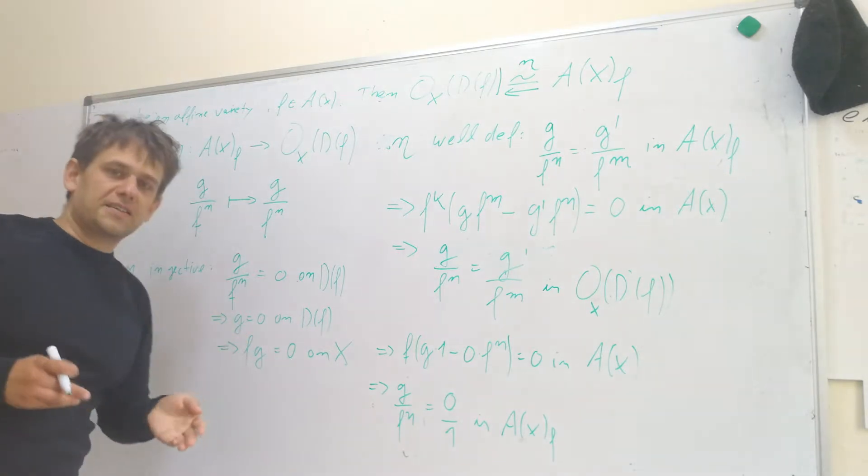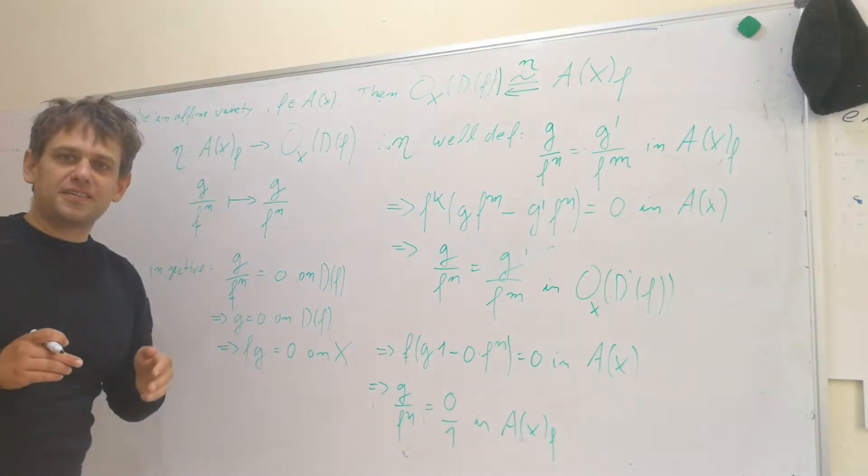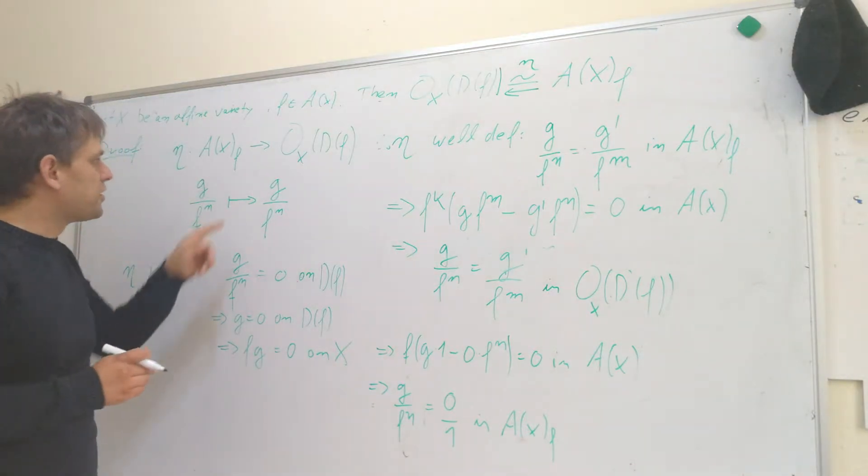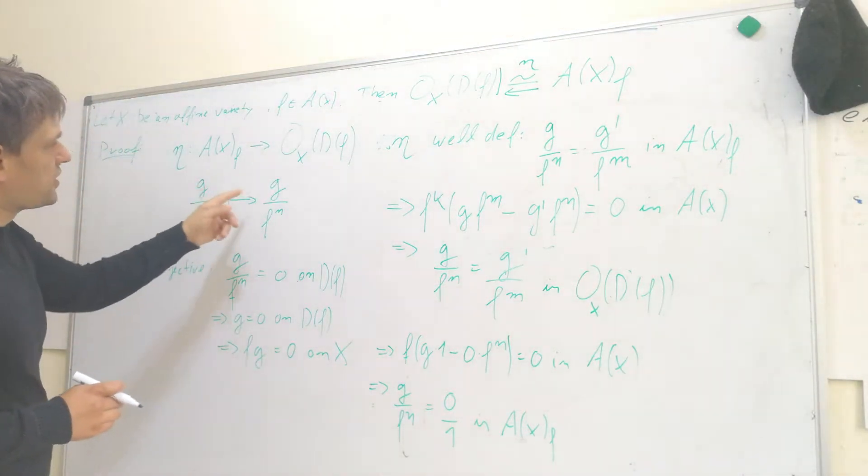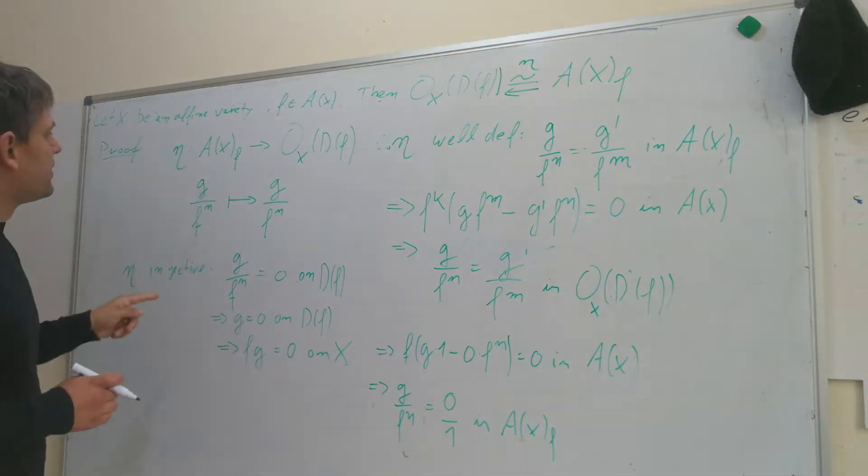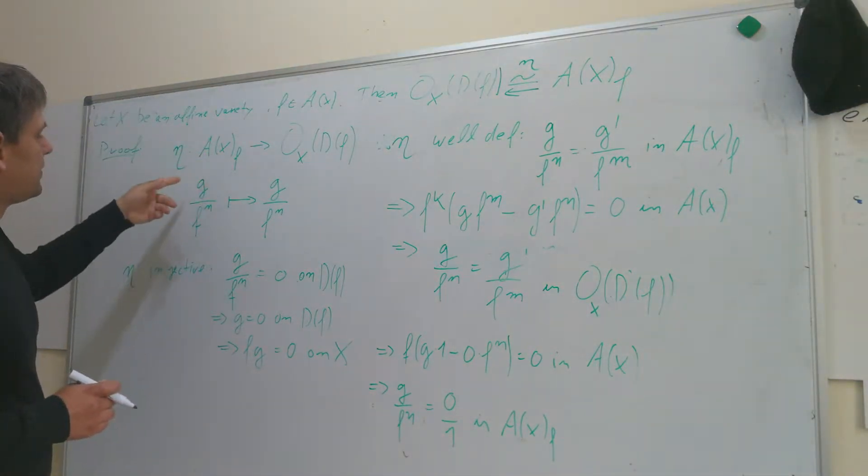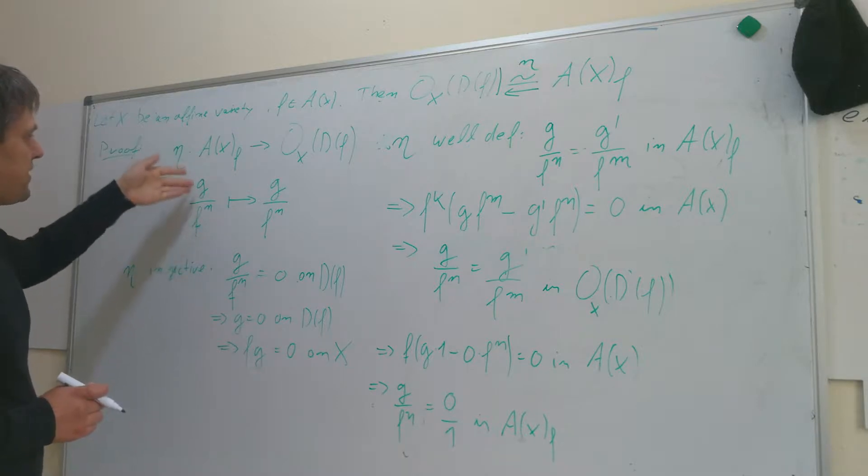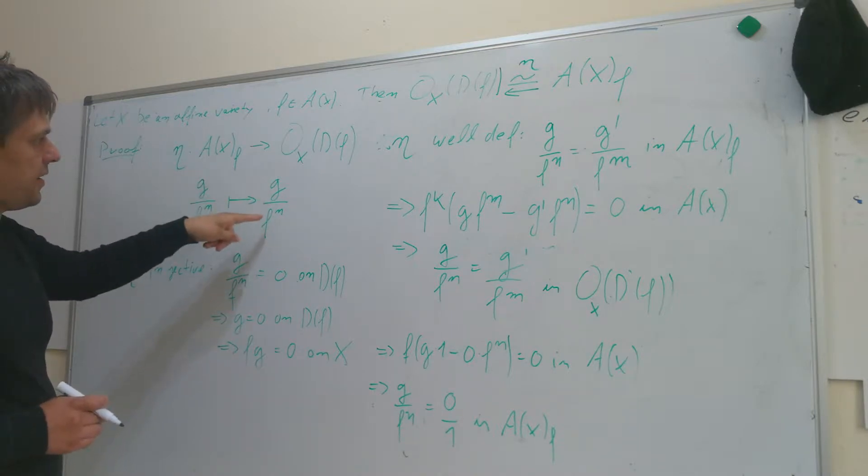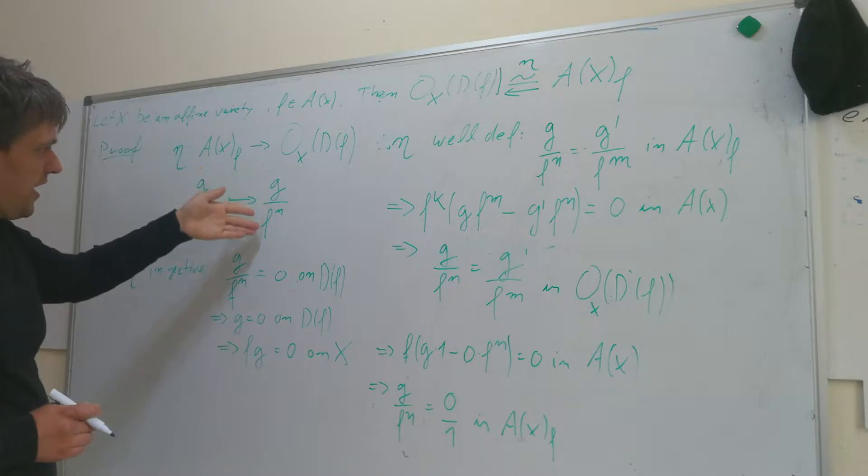At first glance, it might seem as if nothing has happened. But this is a change in interpretation because here in Ax localized at f, this is a way of writing an equivalence class. And over here, we're dealing with an actual quotient of polynomials g and f^n.